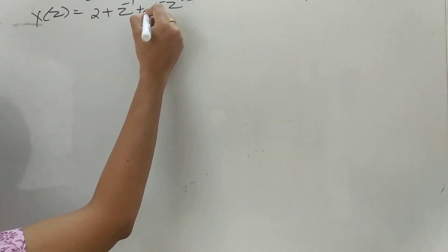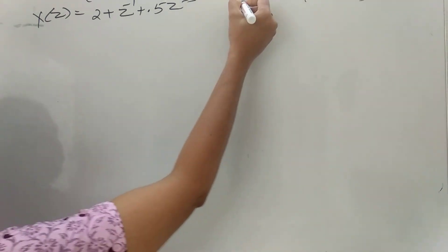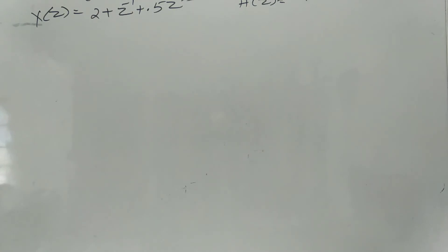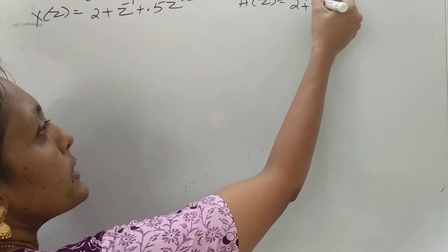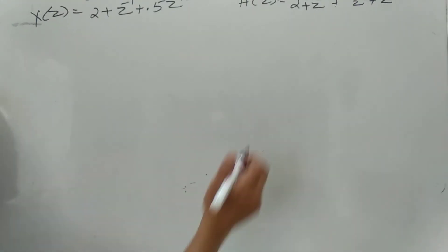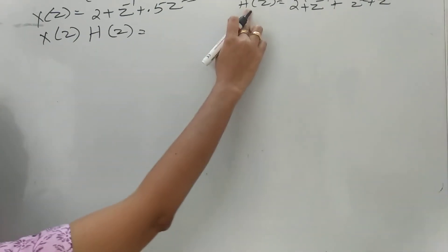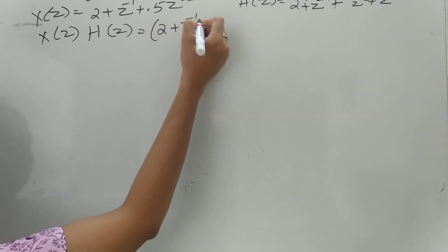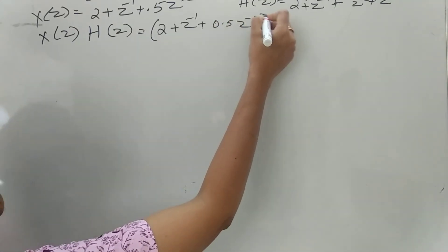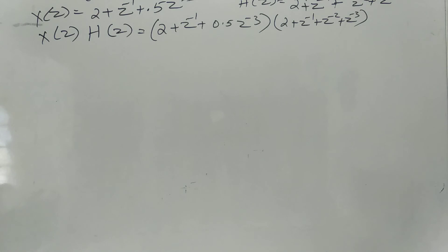Now we are going to compute X1(Z) into X2(Z) — here X2 is taken as H of Z — and find the multiplication. Then you take the inverse Z transform and write the result. There is also an alternate method I want to show you.